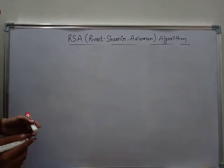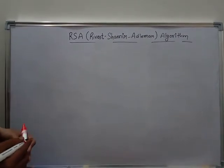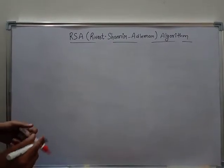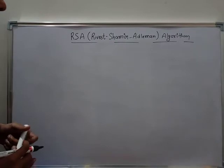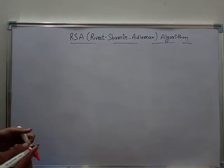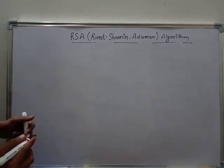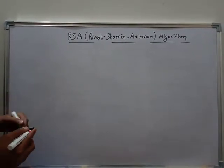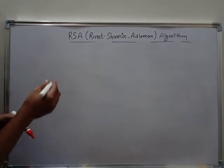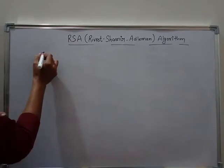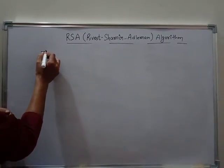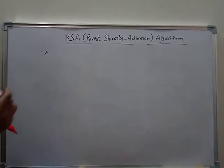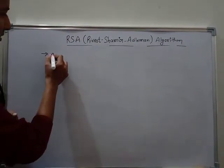Hello friends. In this video we will study about the RSA algorithm. The full form of RSA is Rivest, Shamir and Adleman. These are the three scientists. This algorithm is used for encryption and decryption of messages.